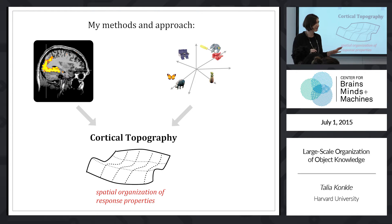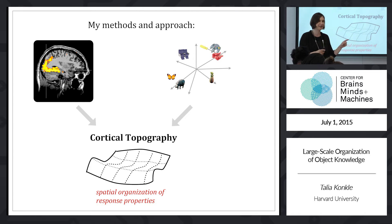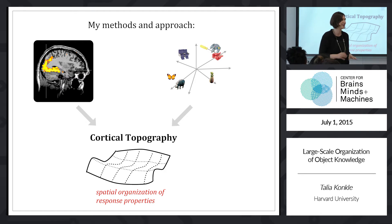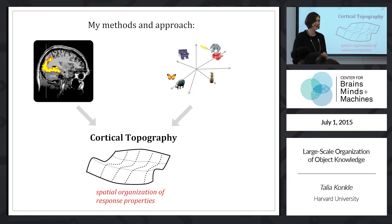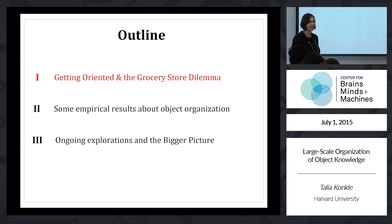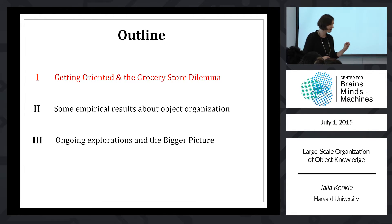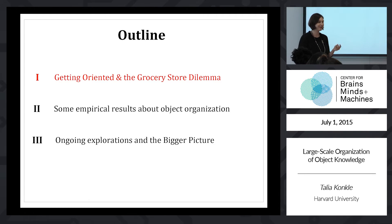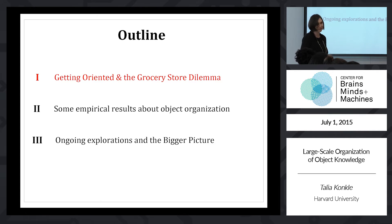I'm mostly going to assume you're somewhat familiar with fMRI since Rebecca Sacks went before. If you ever have questions about what method I'm using, just jump in — in general, interrupt me as much as you want, I'd much rather have this be interactive. The outline for today: getting oriented and the exercise we're going to do together — the grocery store dilemma. Then I'll share some empirical results about object organization, and at the end we'll talk about ongoing explorations and where this field is going.